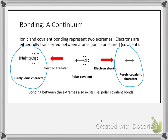What we're going to talk about now is something that comes in between those, which is called a polar covalent bond. Covalent still means that electrons are shared, but polar covalent means unequal sharing. So let's talk a little bit more about unequal sharing.